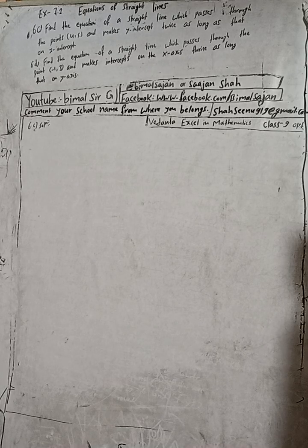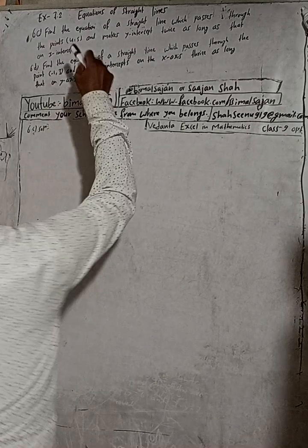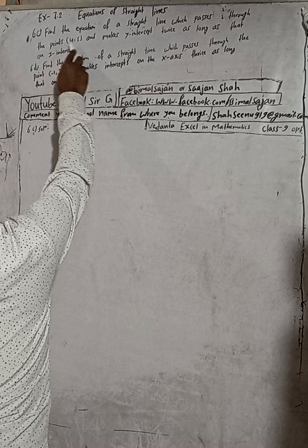Hi class 9 and 10 students, welcome back to Bhimalsarji YouTube channel. This is question number 6C, exercise 7.2, equations of straight lines, class 9 optional mathematics. Don't forget to check the playlist. Here the question is: find the equation of a straight line which passes through the point (4,5) and makes y-intercept twice as long as that on x-intercept.